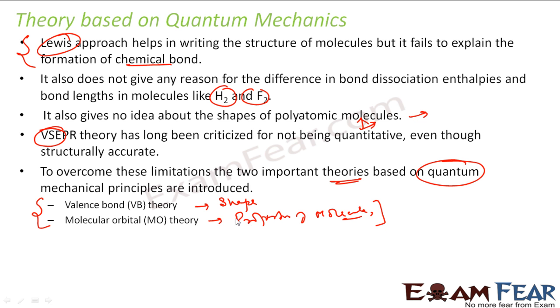It's more about the chemical properties of the molecule, given by molecular orbital theory. The shape is mostly given by valence bond theory. So we learn valence bond theory now.